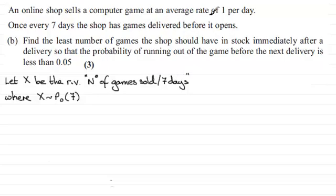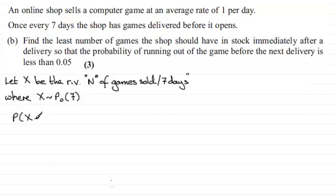We're told that games are sold at an average rate of one per day, so over a seven-day period the random variable X follows a Poisson distribution with a mean of 7. So we're looking for the least number of games n over this seven-day period such that the probability of running out — that is, P(X > n) — must be less than 0.05.